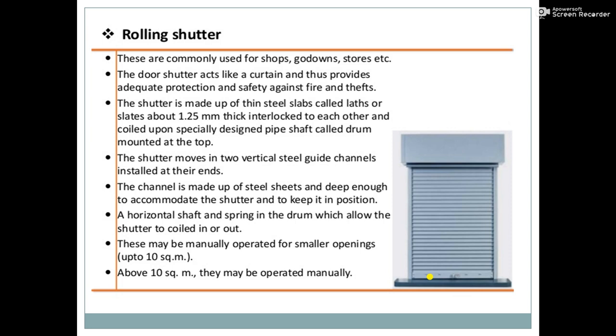The horizontal shaft and springs in the drum allow the shutter to coil in or out. These may be manually operated for smaller openings of about 10 square meters. These rolling shutters provide adequate protection and safety from fire and thieves. They are generally fixed into the wall with steel channels and guides installed at the required height. Shutters above 10 square meters have to be operated mechanically.